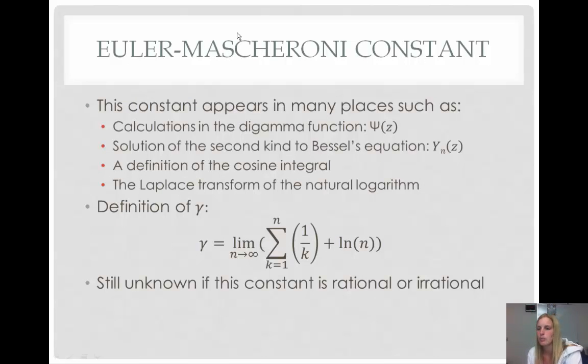Like I said, the Euler-Mascheroni constant appears in many places. A few of these are the calculations in the di-gamma function, psi of z, which we just looked at, and also the second solution of the second kind to Bessel's equation, y sub n of z, which we also just looked at. They also appear in many others, but a few that I listed here are the definition of the cosine integral along with the Laplace transform of the natural log.